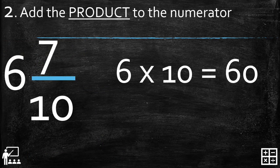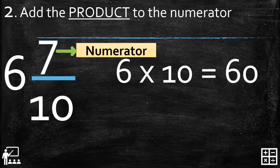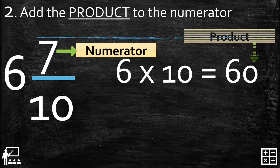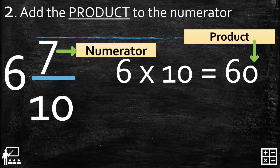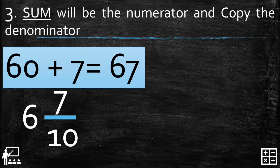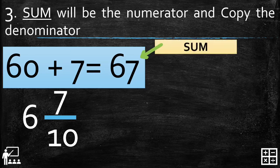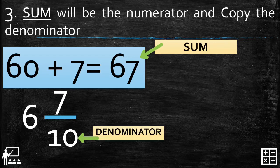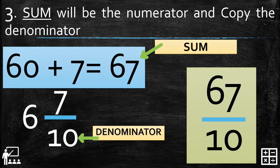Step two: add the product to the numerator. The numerator on the mixed number is 7 and the product from step one is 60, so 60 plus 7 gives us 67. Proceeding to step three: the sum will be the numerator and we copy the denominator. The sum is 67 and the denominator is 10, so the answer is 67 over 10.